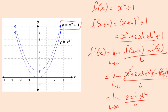Simplifying: x² cancels with x², and +1 cancels with −1 — if you didn't have the bracket you'd be in trouble. What you're left with is the limit of [2xh + h²] all over h as h tends to zero. That simplifies to the limit of 2x + h as h tends to zero. The final answer: the derivative of x² + 1 is 2x.